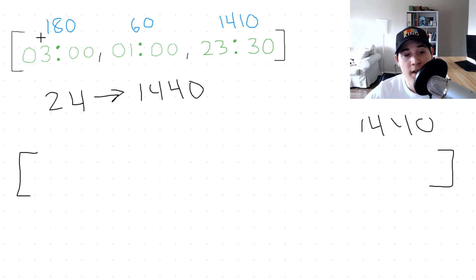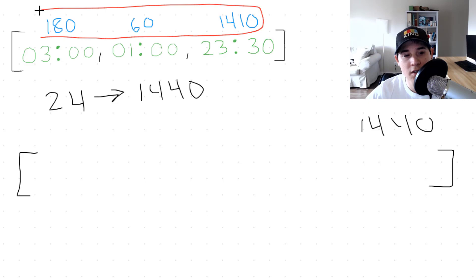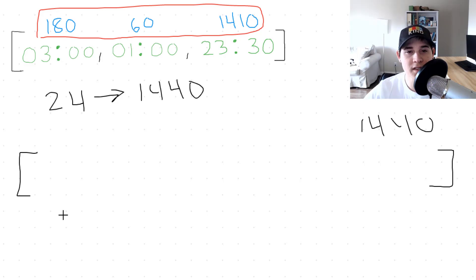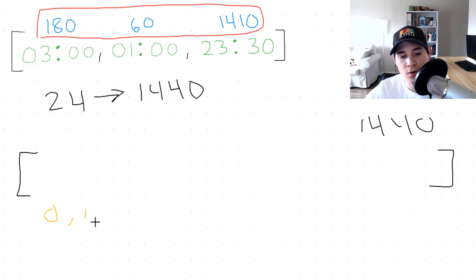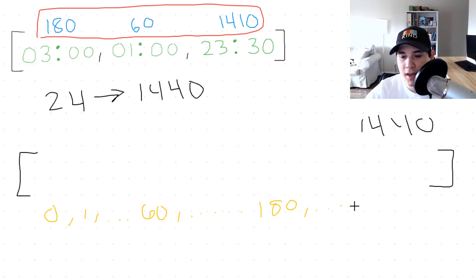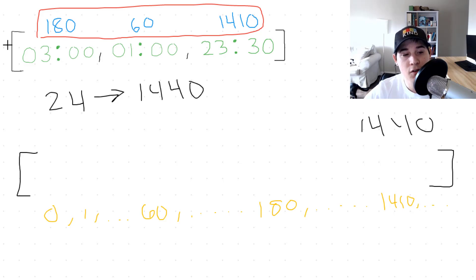We map these integer values inside the array where the index is the actual value we calculated. So labeling the indices, we go up to 60 because we have a 60, then up to 180, and then finally 1410.